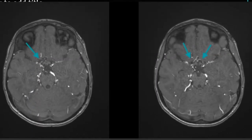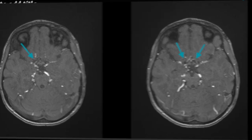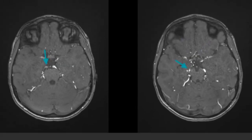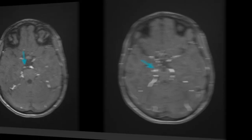These images show narrowing of A1 segments of both anterior cerebral arteries, with the A1 segment of the left anterior cerebral artery being barely visualized. Mild to moderate narrowing of P1 and P2 segments of the right posterior cerebral artery is also seen.